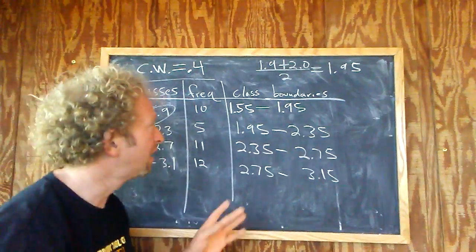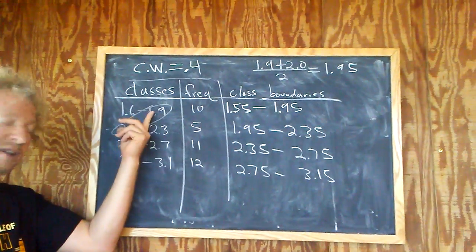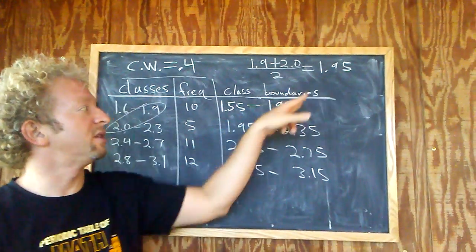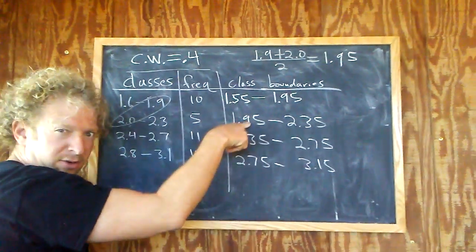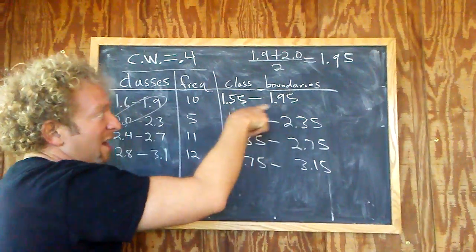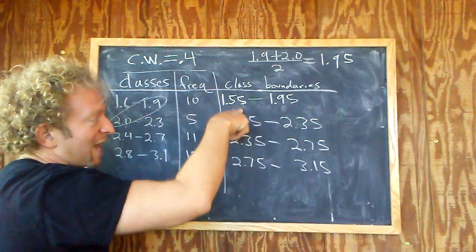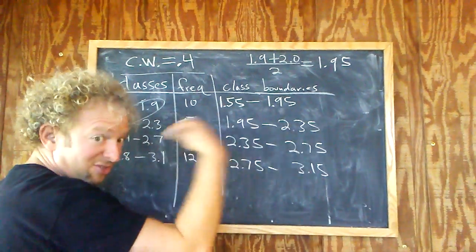Okay, let me go over it one more time, and then I'm going to show you one more little thing. So the first thing you do is you take these two numbers, add them up, divide by 2. That goes here. And then to get this number here, you just subtract the class width. You get this. 1.95 minus 0.4 is 1.55. Then you just add 0.4 to both sides to get the rest. So that's it. Those are the boundaries.